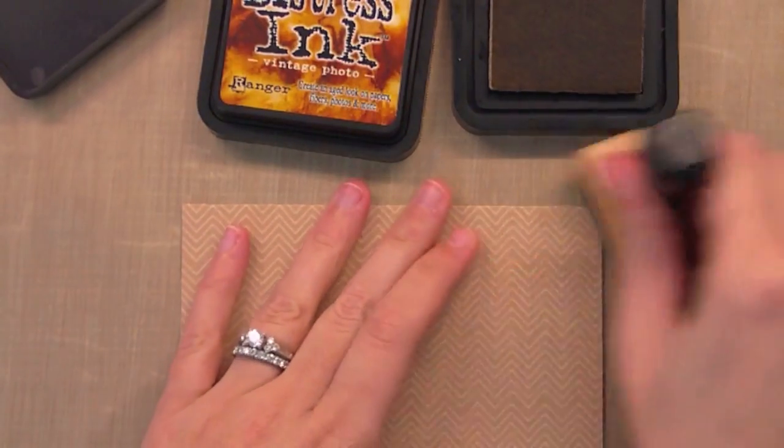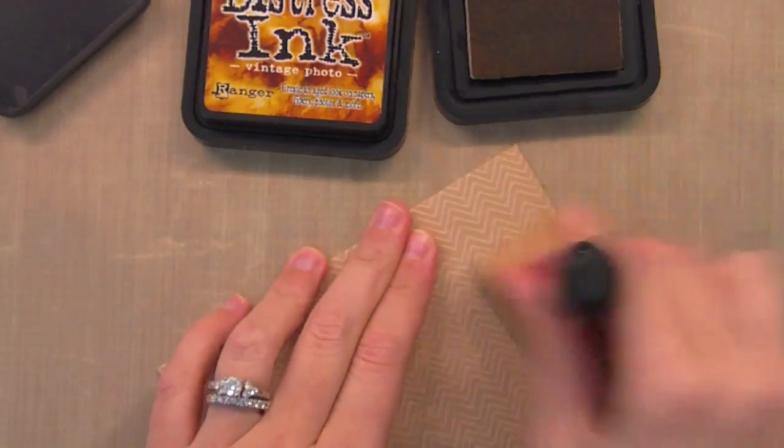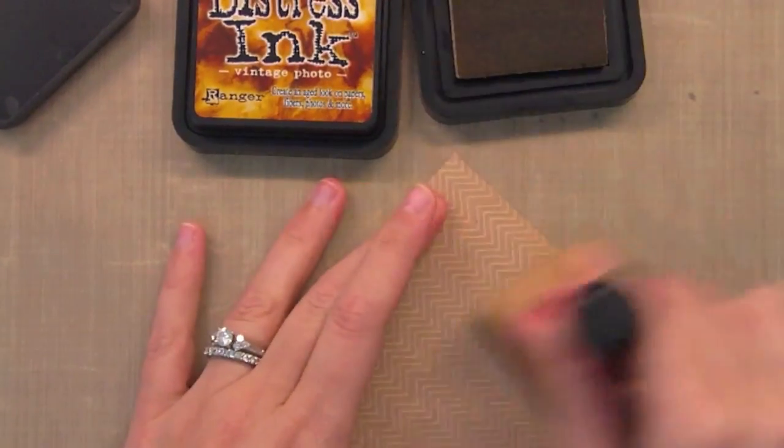I decided since I used distress markers on my flowers that it would be fun to use distress ink straight onto the craft. What's cool is it just gives the craft a little bit of a distressy look and it's going to make it look really awesome with the flowers.